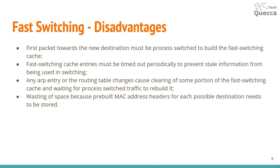Fast switching has several disadvantages. The first packet toward a new destination must be process-switched to build the fast switching cache. Fast switching cache entries must be timed out periodically to prevent stale information from being used. Any ARP entry or routing table change causes cleaning of some portion of the fast switching cache, requiring process-switched traffic to rebuild it. There is also wasting of space, because rebuilt MAC address headers for each possible destination need to be stored.